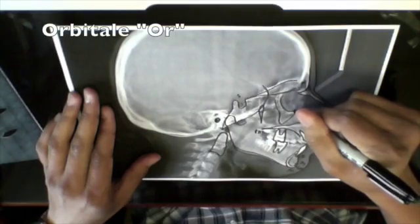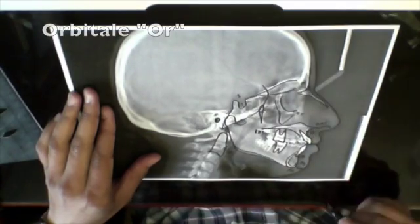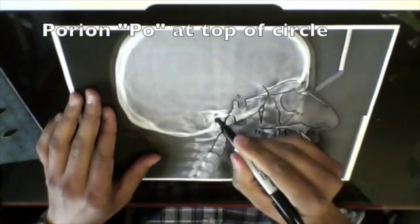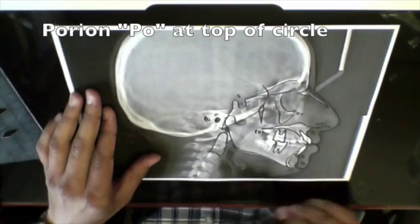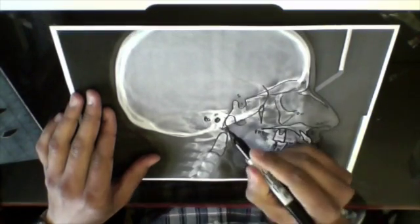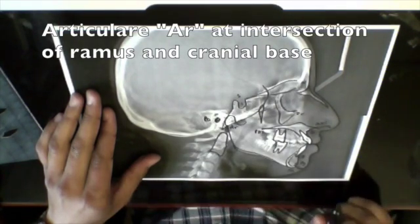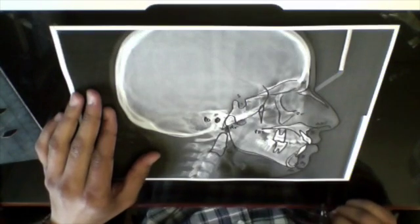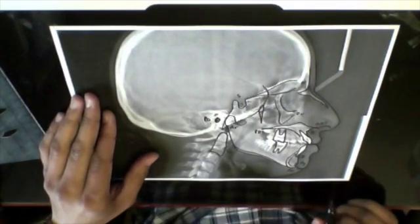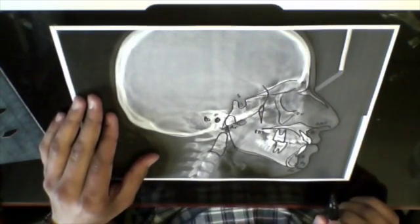Mark orbitale at the lower part of the outline of the orbit. Mark porion at the top edge of the outline of anatomic porion. You may also mark articulare at the intersection of the ramus tracing and cranial base tracing. Although we are not using it in any measurement at KUTC, there are analyses that use it.